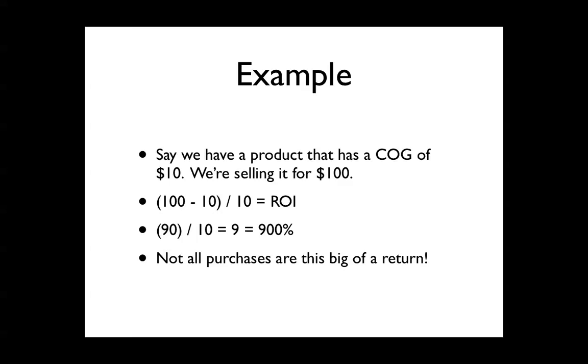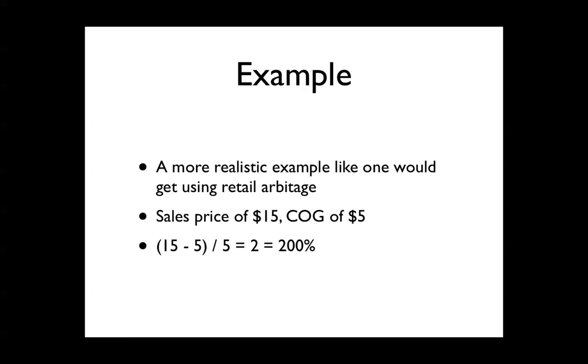A more realistic example like one would get using retail arbitrage: sales price of $15, cost of goods of $5. 15 minus 5 is 10. 10 divided by 5 is 2. 2 times 100 is 200%. Simple, easy to take in.